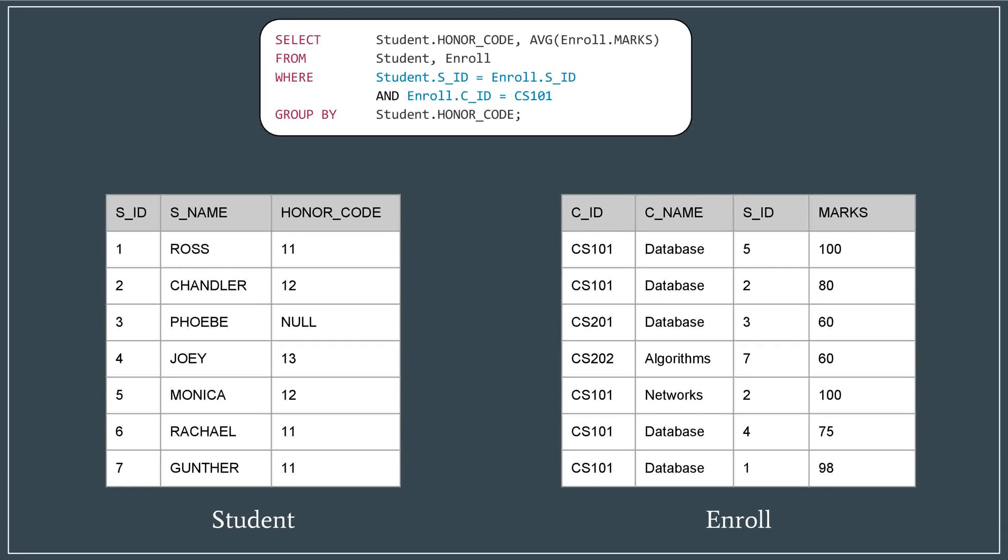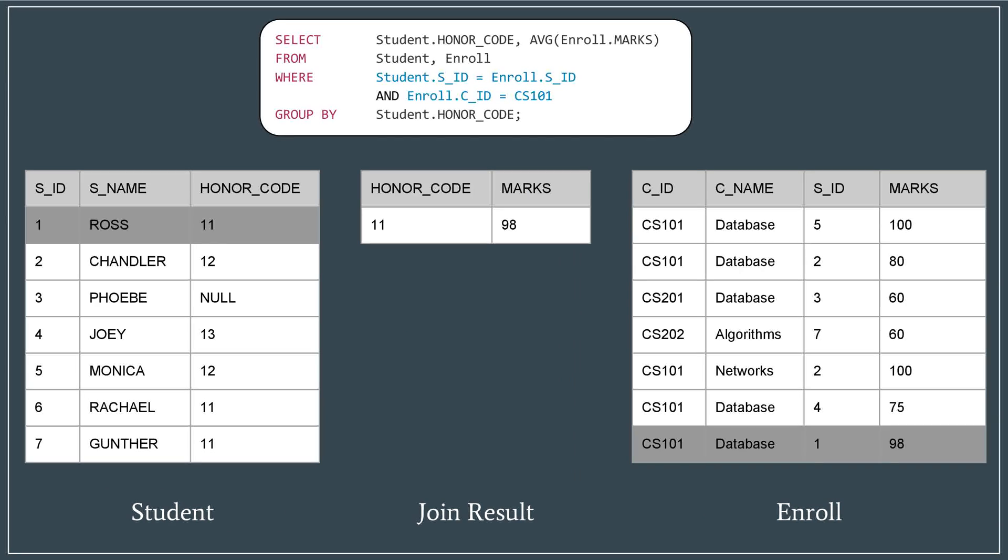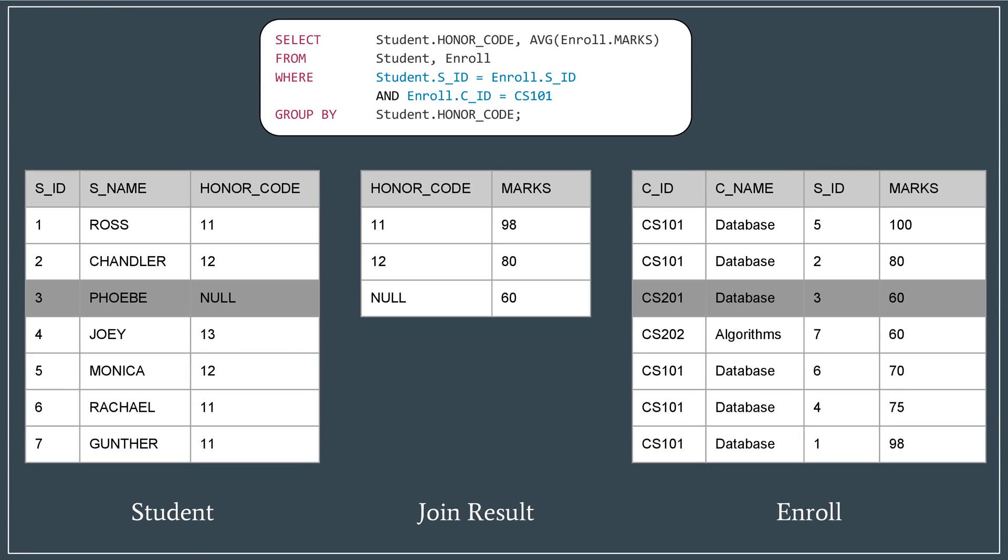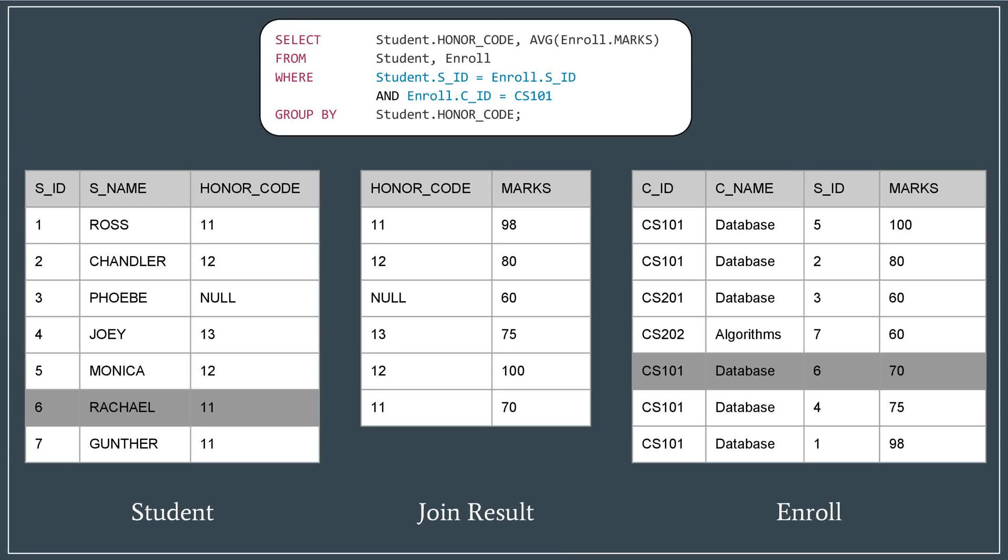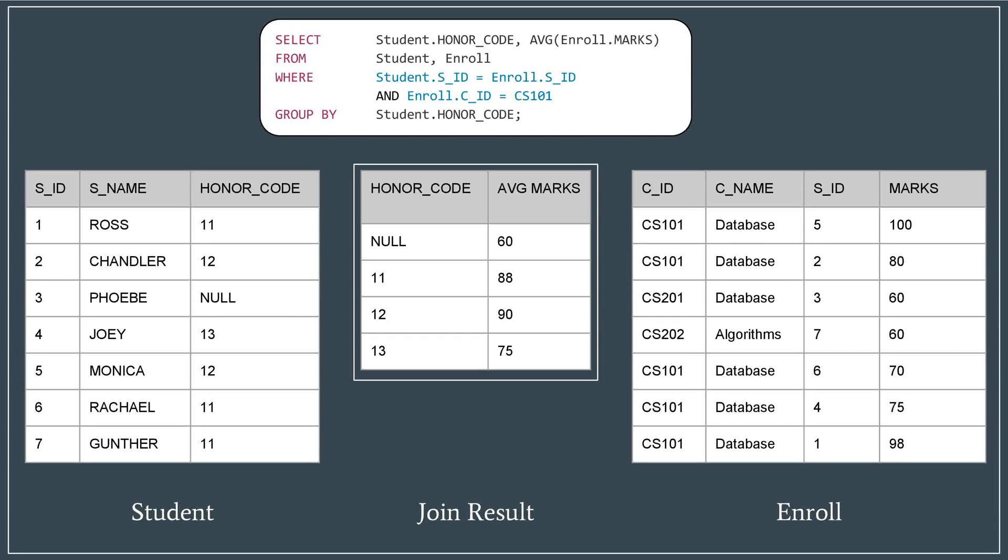Consider joining these tables based on the above query. The join operation gets executed in this manner and finally we get this answer. Executing the group by query and taking average, which is the aggregation function here, will fetch us this.